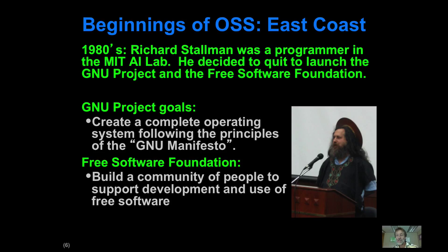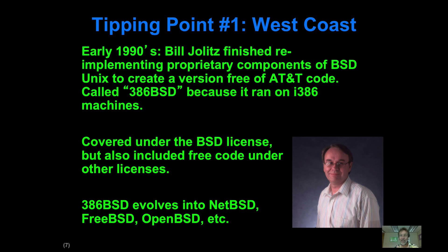Over on the other side of the United States, there was a programmer working in the MIT AI lab who decided to figure out how to solve this problem of software not being freely available for everybody to use, due to these license restrictions — and to do so by thinking about almost a new philosophy of software development. This philosophy was described in something called the GNU Manifesto, and then he created an organization called the Free Software Foundation to try to move these principles forward.